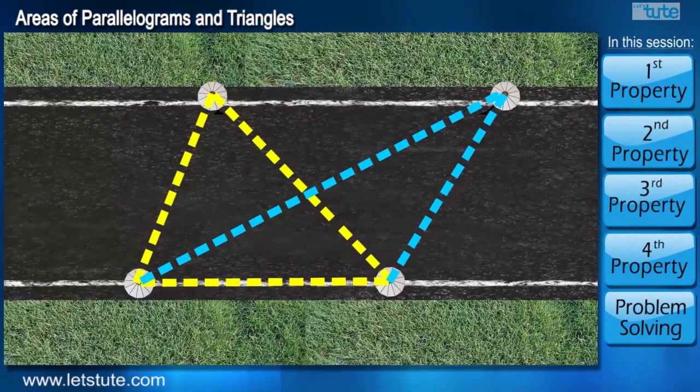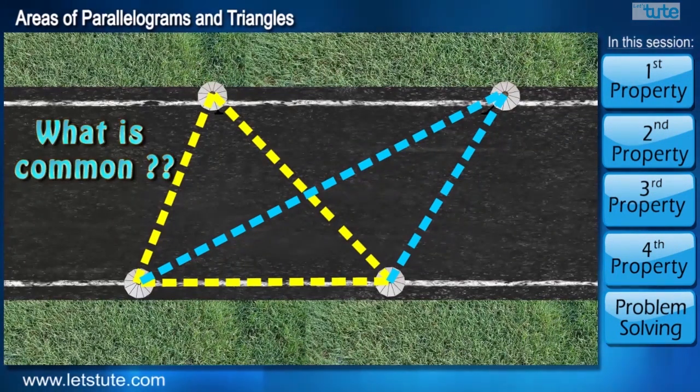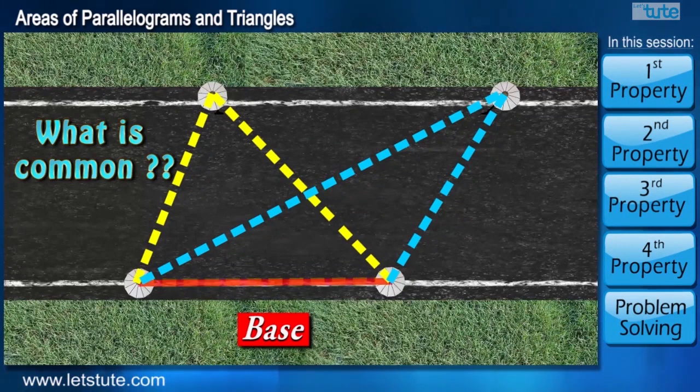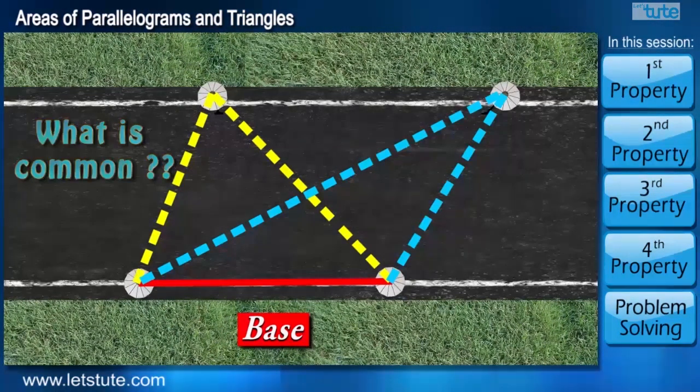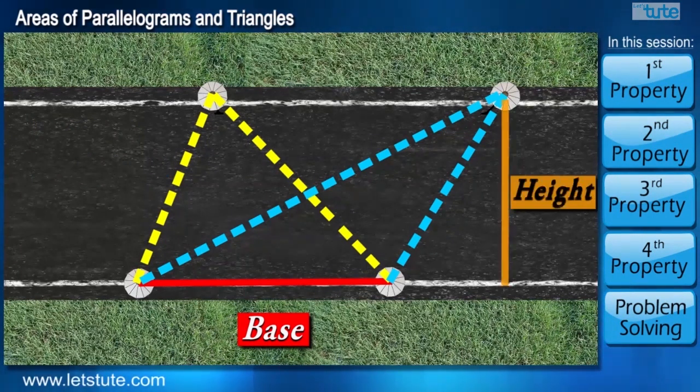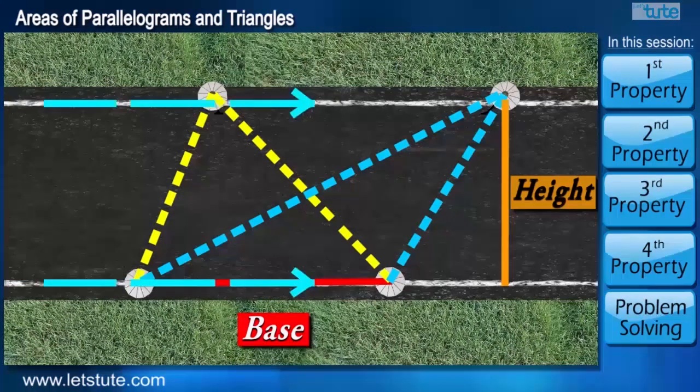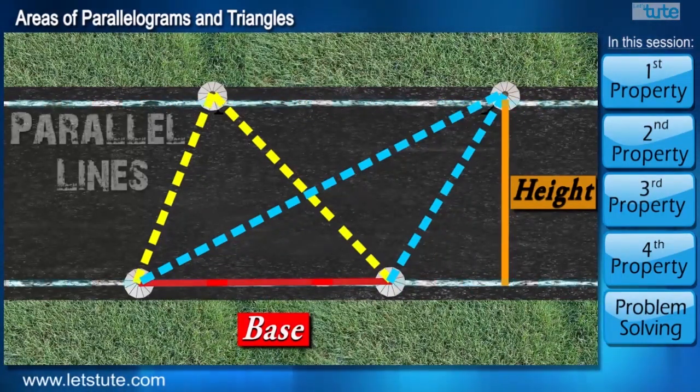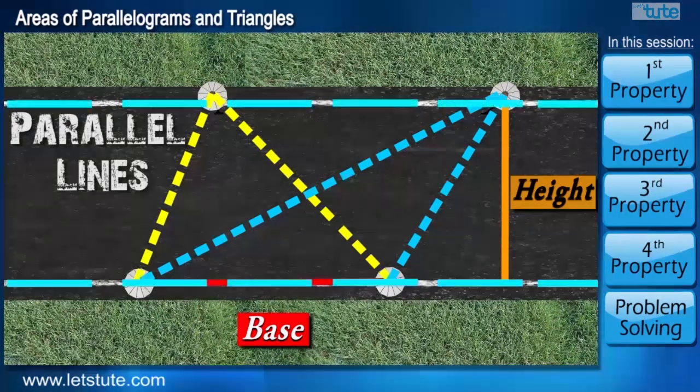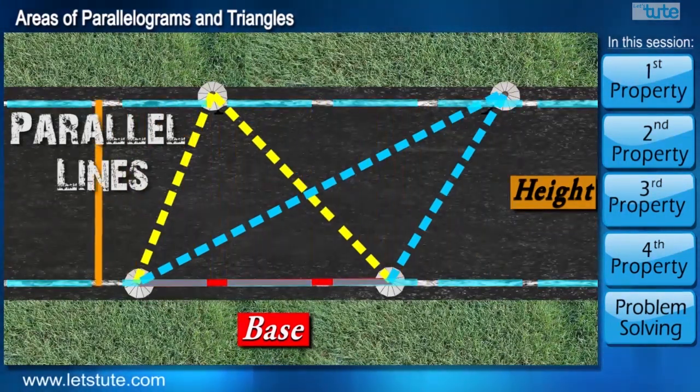By looking at the diagram, can you tell me what is common between the two triangles? They have a common base and one more thing is common between them. They also have a common height because if we see the boundary of the road, they form parallel lines.